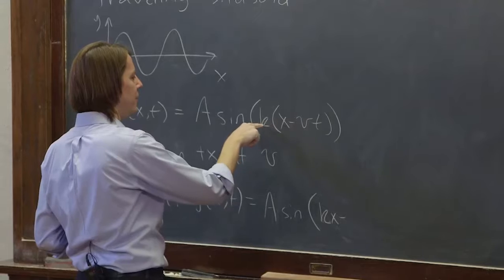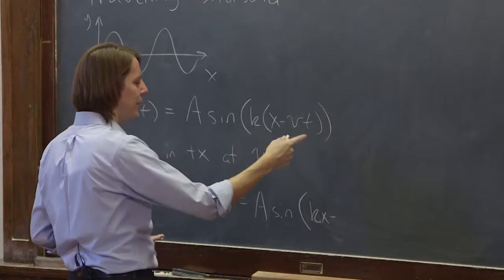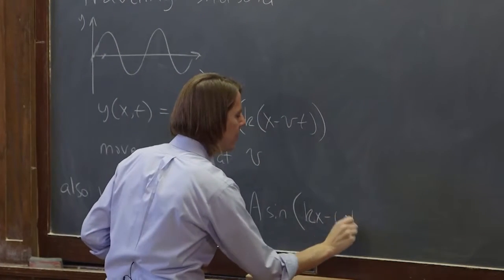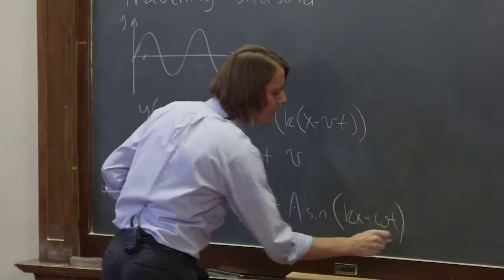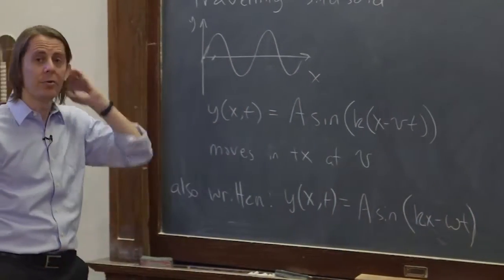This is the phase per unit meter times the velocity. It's a phase per unit time, the angular velocity. So that's the normal way to write a traveling wave, a sinusoidal traveling wave.